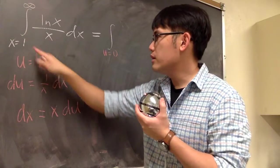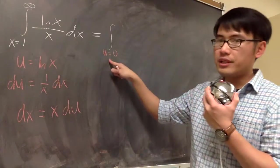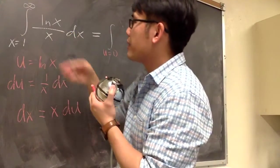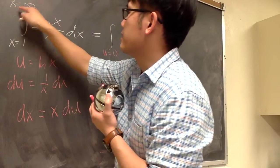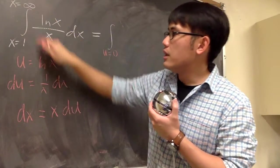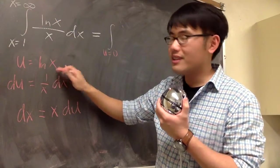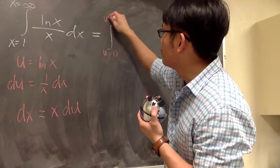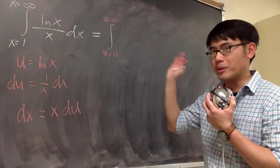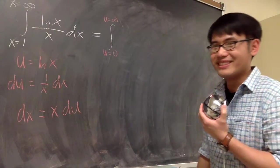So the beginning point right here will be 0. And then on the top, this means we have x is equal to infinity. If x is infinity, ln of infinity is also infinity. So the top here is u equals to infinity. In the u world, this integral is still going to be improper.